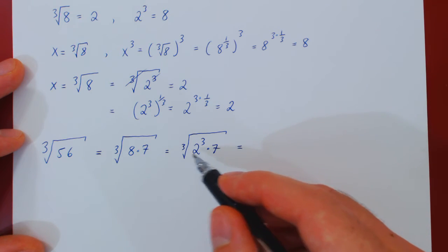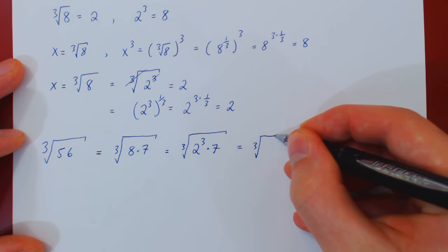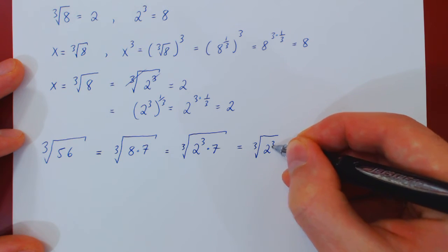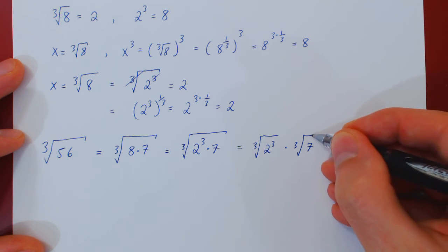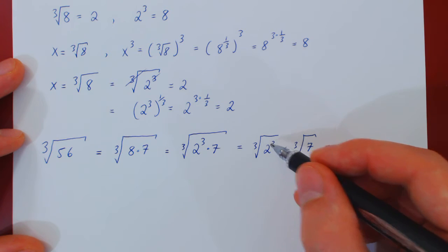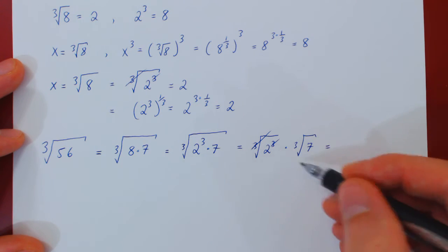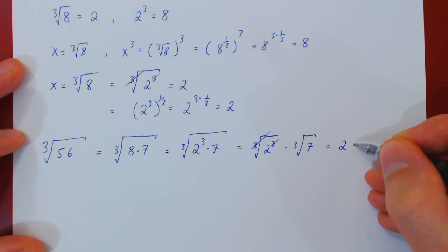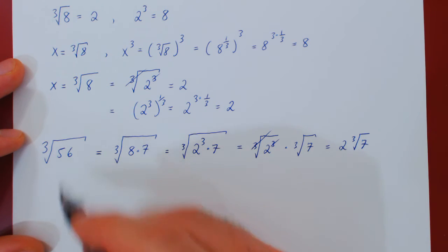We have a cube root over a product we can distribute. So this is the cube root of the first term, 2 cubed, times the cube root of the second term, 7. So in the end, well, the cube root of a cube needs to cancel, and we're left with 2 times the cube root of 7. And so in this way we have the cube root of a much smaller integer.